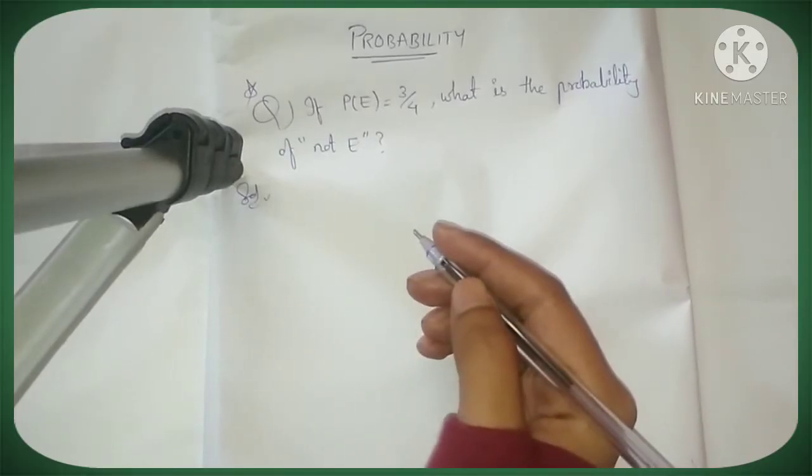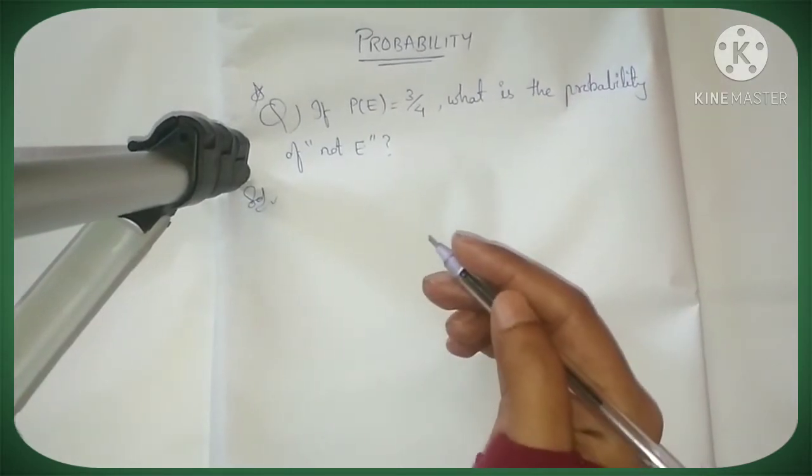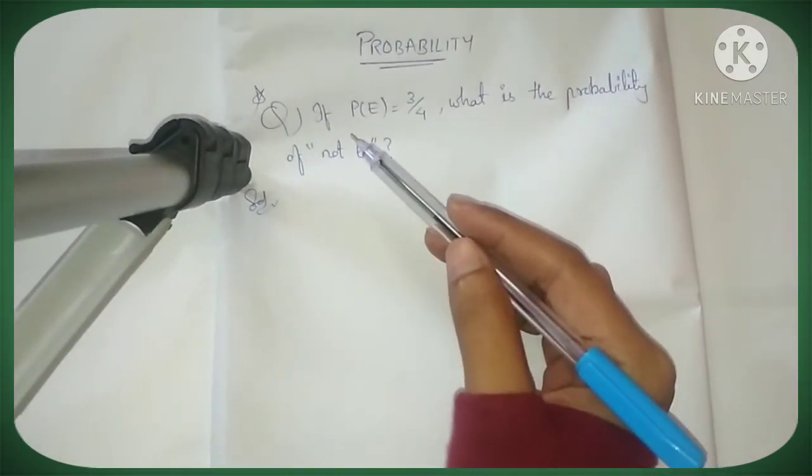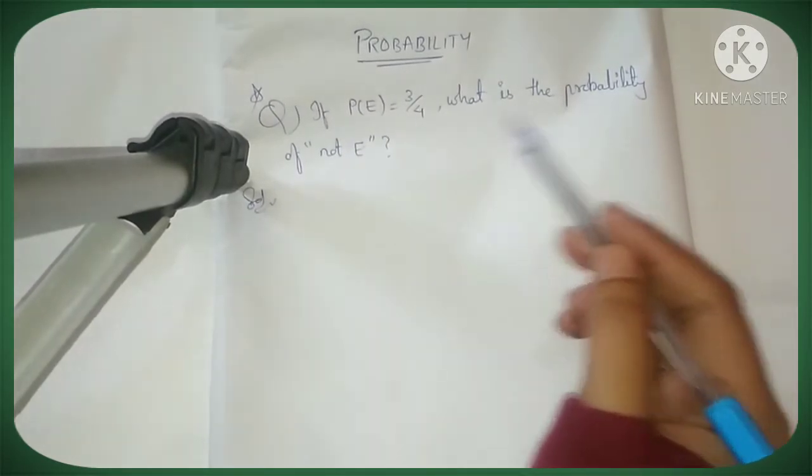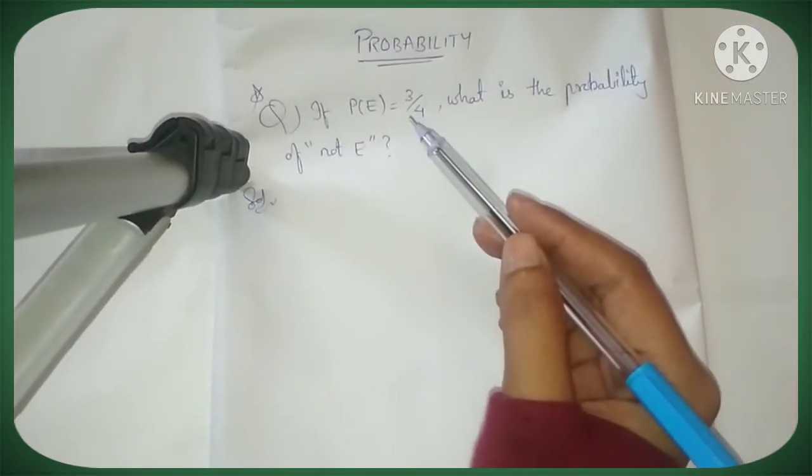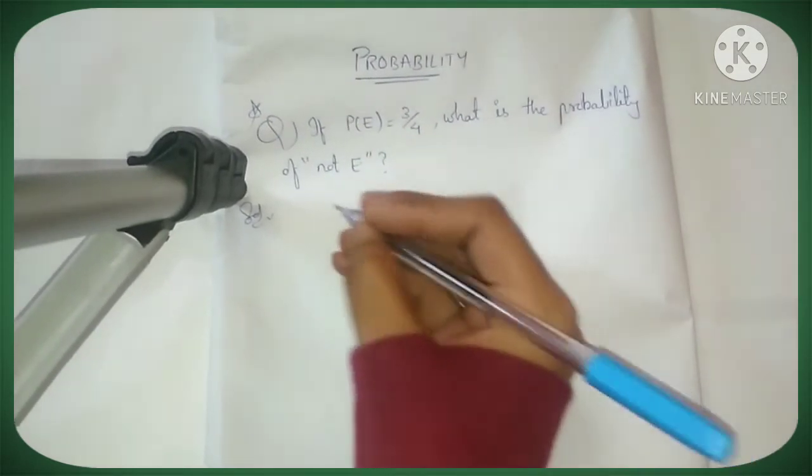Hello everyone, welcome back to my channel. Today's chapter is probability. Our question is: if P(E) is equal to 3/4, what is the probability of not E? P(E) is given, so first...